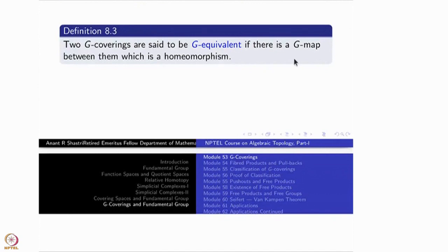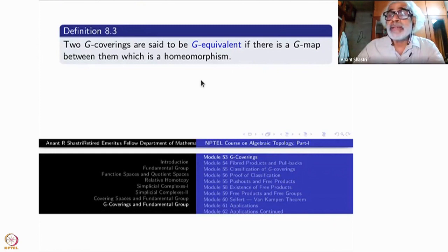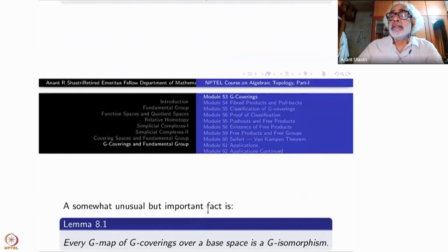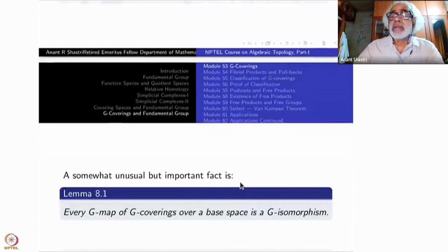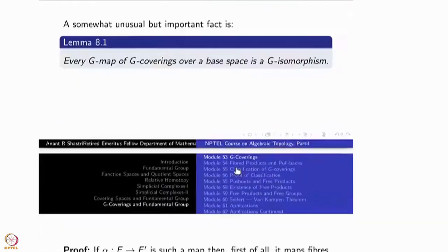If a group homomorphism is invertible, automatically the inverse is a group homomorphism — it is just like that. But why is it a homeomorphism? That is the beauty here. It is not very surprising, but it is a mild and present surprise. So let us go through this proof.